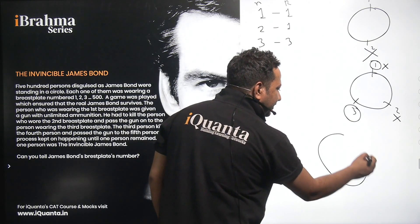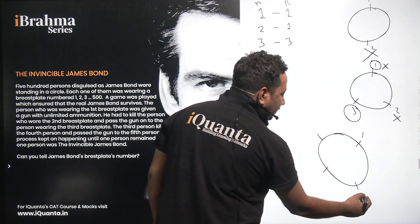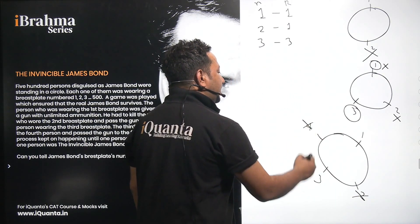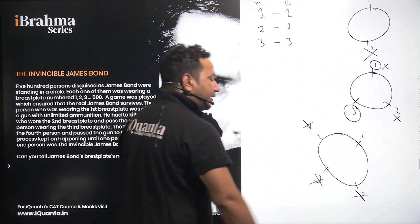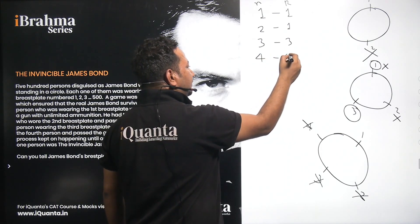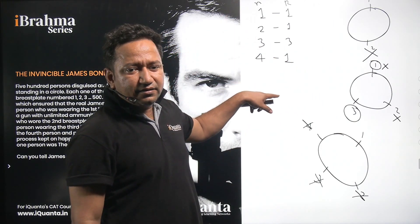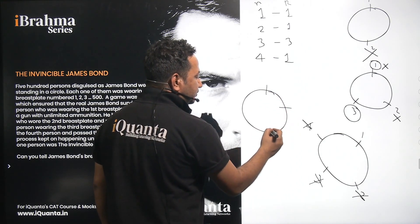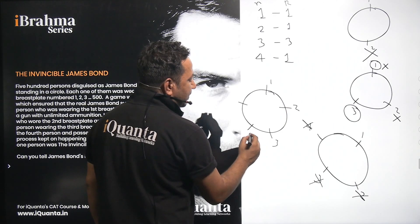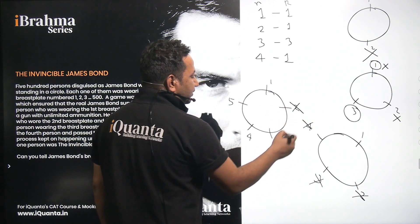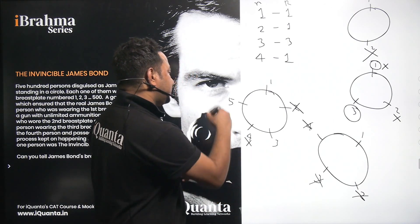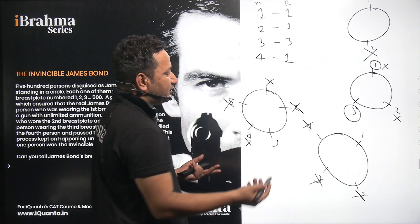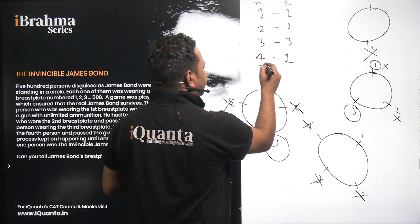What if we had four people? Person one kills two, passes to three; three kills four, passes to one; one kills three and survives. So for N=4, R=1. For five people: person one kills two, passes to three; three kills four, passes to five; five kills one, passes to three; three kills five — so for N=5, R=3.